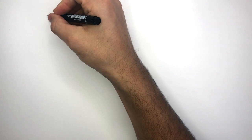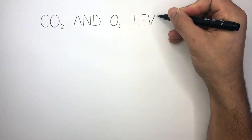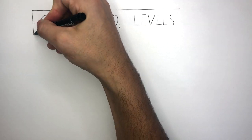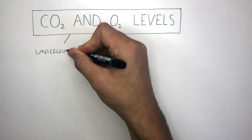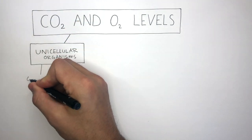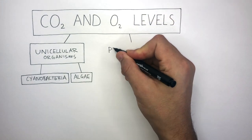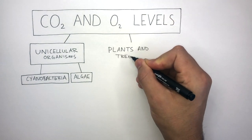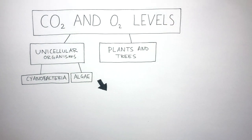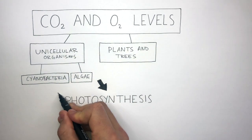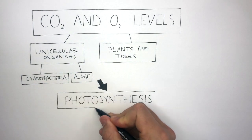We're going to learn how carbon dioxide and oxygen levels have been affected by unicellular organisms such as cyanobacteria and algae. We'll then move on to how plants and trees have drastically changed carbon dioxide and oxygen levels in Earth's atmosphere. All of these changes have been due to photosynthesis, which we'll now look at in much more detail.